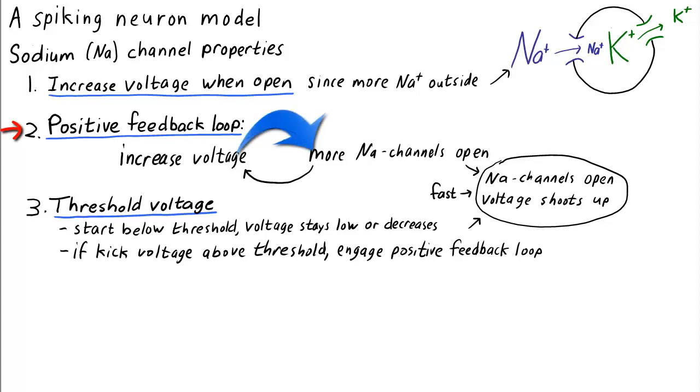Increasing the voltage leads to more sodium channels opening, which leads to an increased voltage. This positive feedback loop is fast, which can lead to the voltage shooting up rapidly.